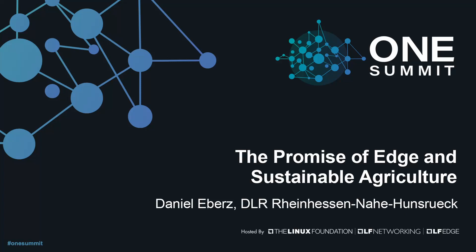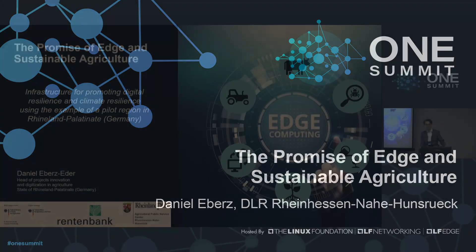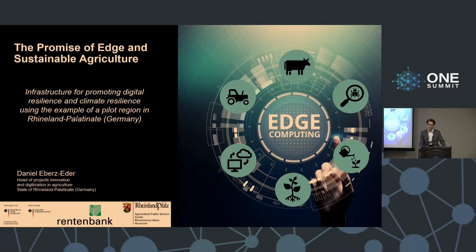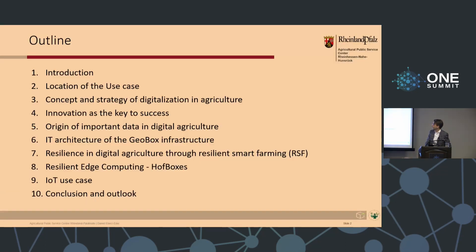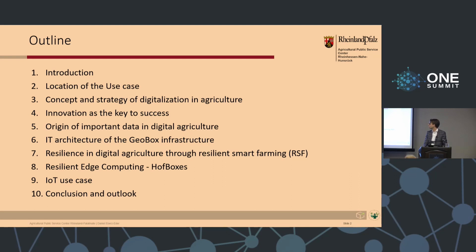I would like to take you to a successful project about edge computing and sustainable agriculture in Germany, in the pilot region of Rhineland-Palatinate. My name is Daniel Ewitz. My outline for today's presentation is an introduction, the location of the use case in agriculture, innovation as the key to success, origin of important data in digital agriculture, IT architecture of the infrastructure, resilience in digital agriculture, resilient edge computing, IoT use case, and a conclusion.